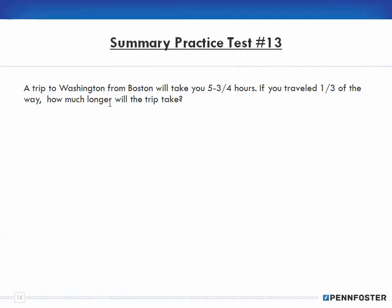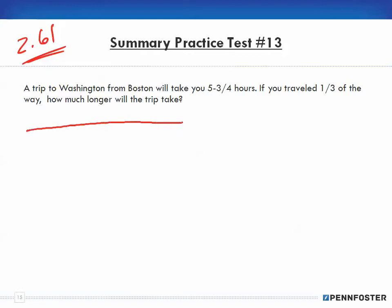Number 13: A trip from Washington to Boston will take five and three-quarters hours. If you've traveled one-third of the way, how much longer will the trip take? I'm thinking of it as a line from Washington to Boston taking five and three-quarter hours. I divide the trip into thirds — one-third, two-thirds, three-thirds.